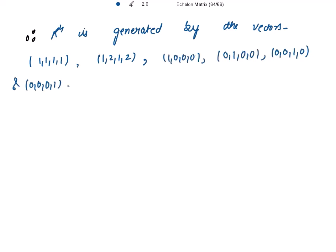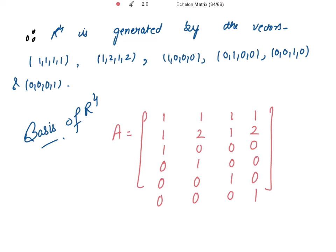And now we need to get the basis of R4. For that, we need to write all these vectors in a matrix form. And then from this matrix, we need to get the echelon form matrix and discover the non-zero rows. Please keep one thing in mind that these two vectors should not be disturbed — so the elements present in the first row and in the second row should remain intact.